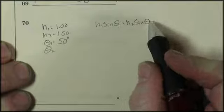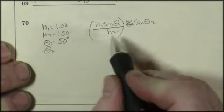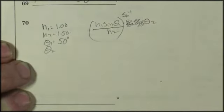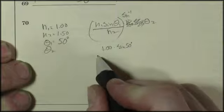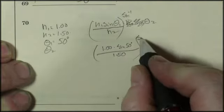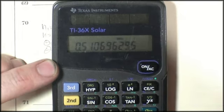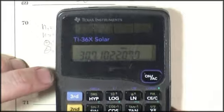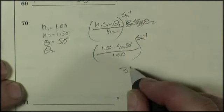N1 sine theta 1 equals N2 sine theta 2. Do algebra. I want to get theta 2 by itself, so I divide both sides by N2. Then I have to take the inverse sine of whatever answer I get, and that gives me theta 2. So 1.00 times the sine of 50 degrees divided by 1.50. Don't forget, you're going to have to take the inverse sine of that. I get 0.51. Oh, wait a minute. That's the sine of the angle. I want the inverse sine of that, and I'm coming up with 30.7. Let's call it 31 degrees. 31 degrees.